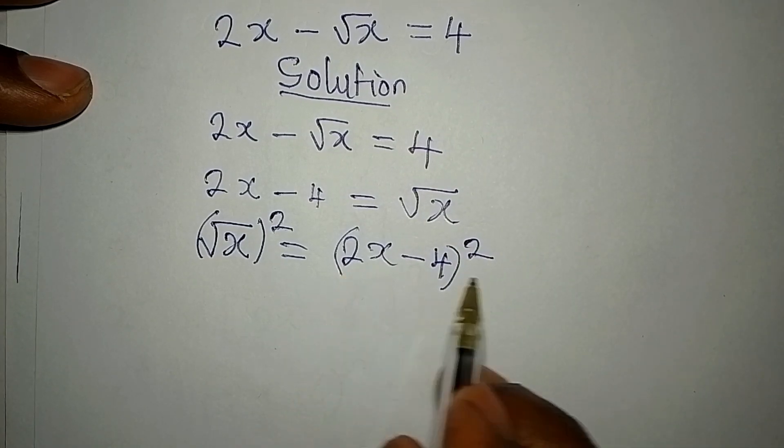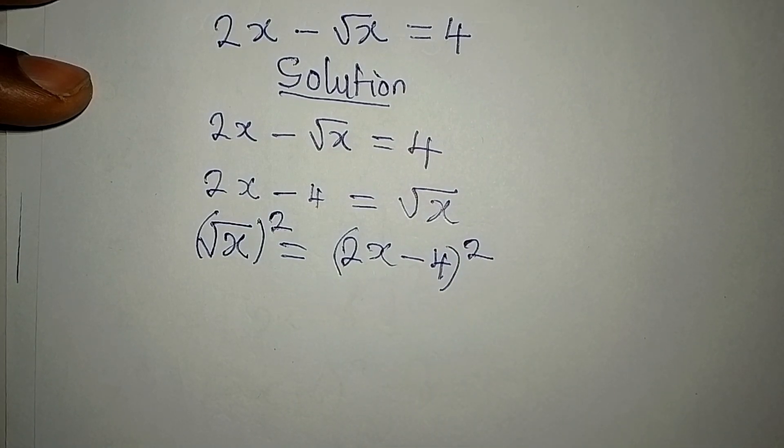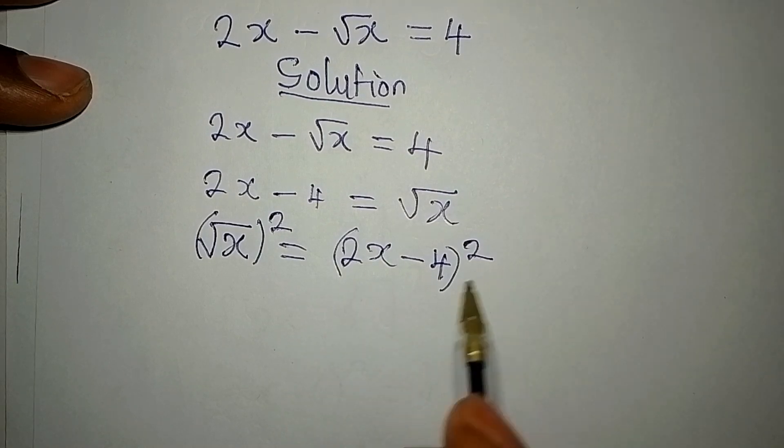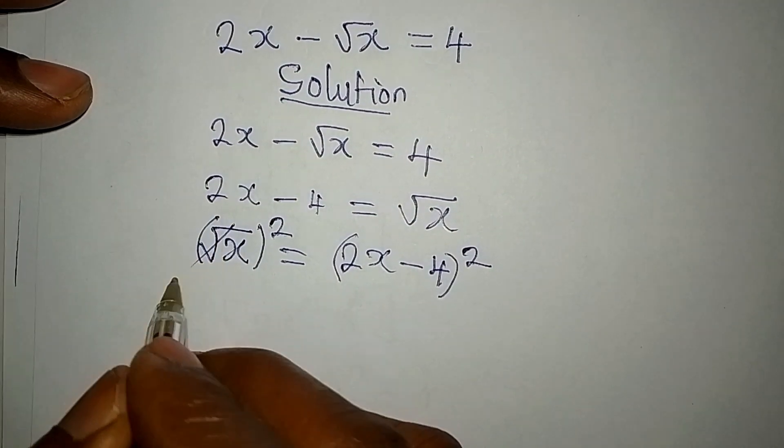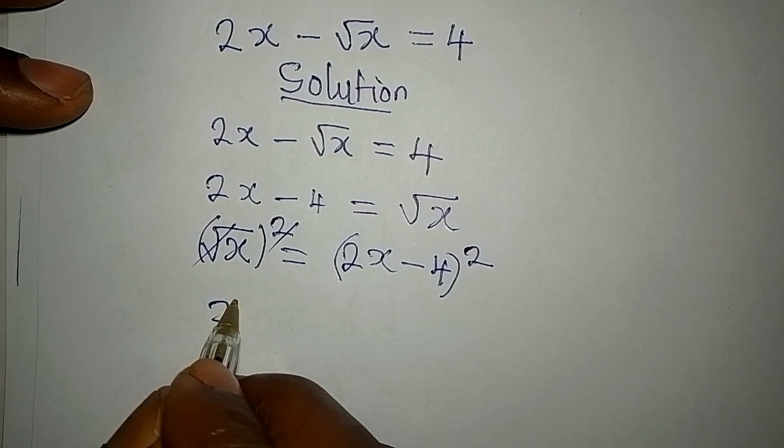If you square them separately, you will be wrong. So put them together and square. Then we'll have this to cancel this. So we have x, and it's equal to...